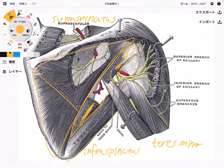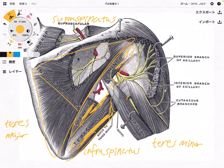Then what is this muscle? This is teres major. It is a little bit confusing between teres minor and teres major — teres minor is a rotator cuff muscle, but teres major is not a rotator cuff muscle.